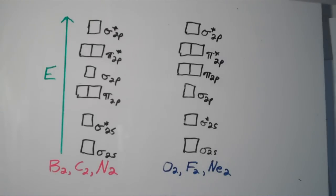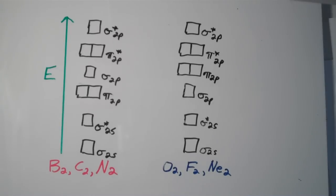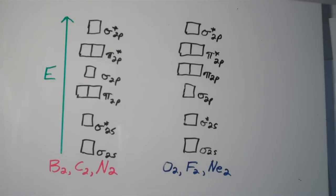Alright, so this is my fifth installment on molecular orbital theory, and basically in this video I just wanted to do a little bit more practice with some of these sigma and pi molecular orbitals that come from the p-atomic orbitals of atoms.